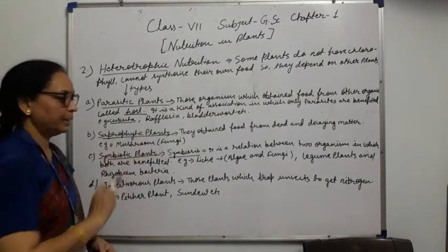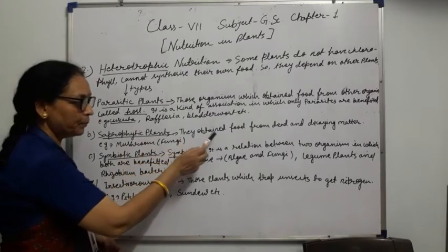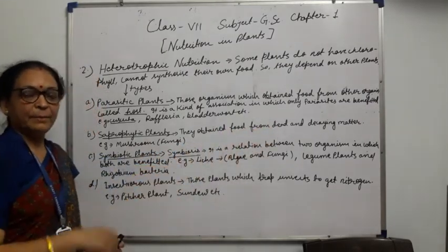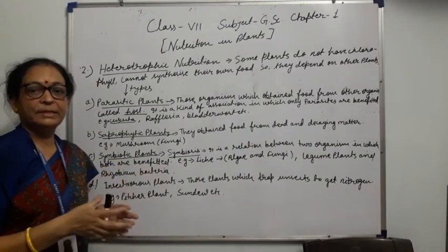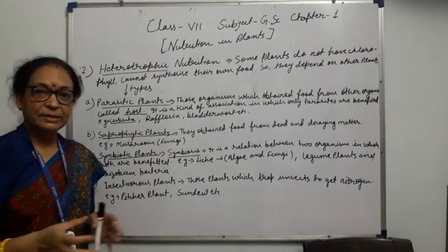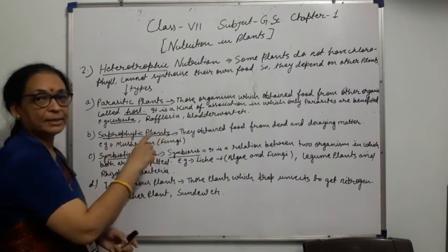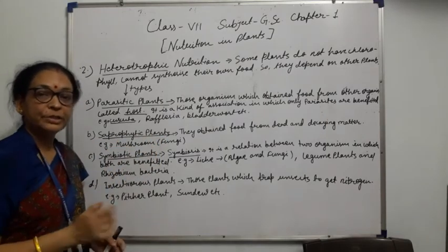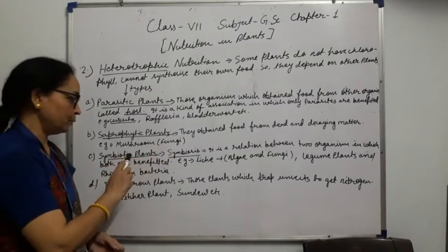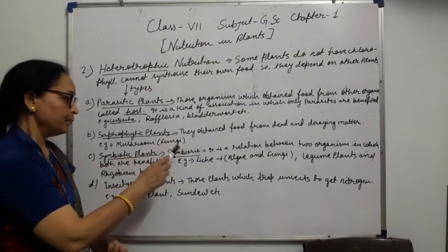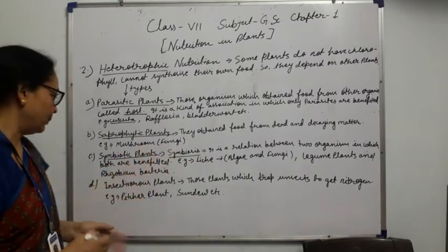The next type is saprophytic plants. Saprophytic plants obtain food from dead and decaying matter — such as vegetable wastage, food wastage, animal wastage. Plants that obtain food from these are called saprophytic plants, and that type of nutrition is called saprophytic nutrition. For example, mushroom, which is a type of fungi.